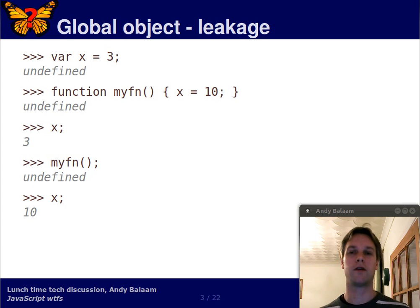So we happen to have this variable that we used inside this function. We called it x and we used it and then we, as far as we were concerned, we threw it away. What actually happened was it leaked out of this function and polluted a variable called x in the global object.